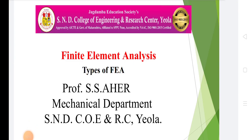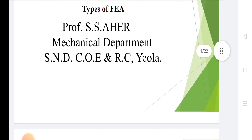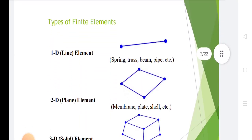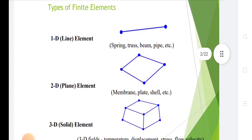Welcome to all students in the subject Finite Element Analysis. Today we discuss about types of FEA. In types of finite elements, there is the 1D line element like spring, truss, beam, pipe.